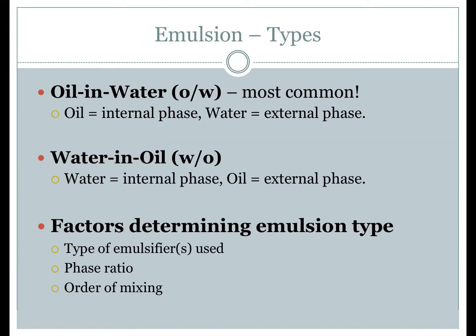When compounding an emulsion, we mix an oil-containing liquid with a water-containing liquid. Using emulsifiers, we can disperse one liquid phase — the internal phase — as droplets within the other, called the external phase. By manipulating three factors, we can create either an oil-in-water emulsion, where oil is the internal phase, or a water-in-oil emulsion, where water is the internal phase. Oil-in-water emulsions are the most common type compounded because they are preferable for oral products due to improved taste and for topical products due to their non-greasy, water-washable feel.